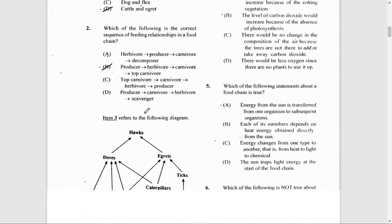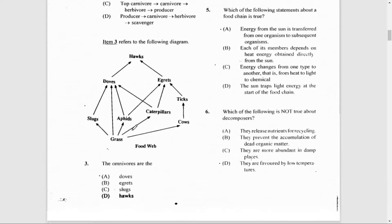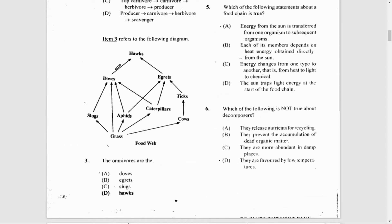Item 3 refers to the following diagram—this is a food web. The omnivores would have to be the doves because the doves feed on both plant and animal material. The plant material here is grass, and animal materials are the slugs, aphids, and caterpillars. Remember, the base of the arrow always points to the organism that has been eaten.